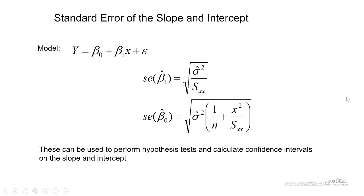Recall from the previous screencast that our standard error of the slope and intercept are given here and I go over all of these different parameters in that previous screencast. These standard errors can be used to perform hypothesis tests and calculate confidence intervals on the slope and intercept. In this screencast I'm going to show you how we can perform hypothesis tests.